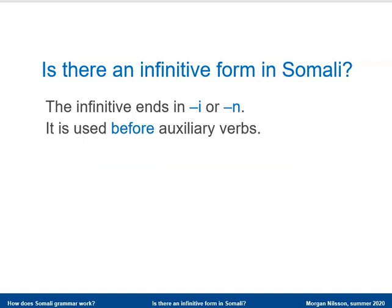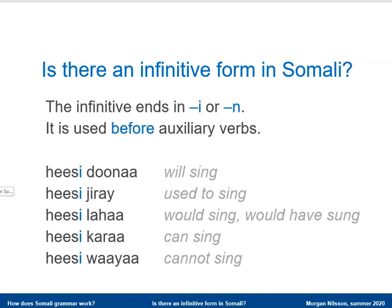In Somali there is an infinitive form, but its use is more restricted than in English — the Somali infinitive is only used together with auxiliary verbs. So it occurs less often in texts than the English infinitive. The Somali infinitive ends either in 'i' or in 'n', and the number of auxiliary verbs in Somali is smaller than in English, with just below ten.